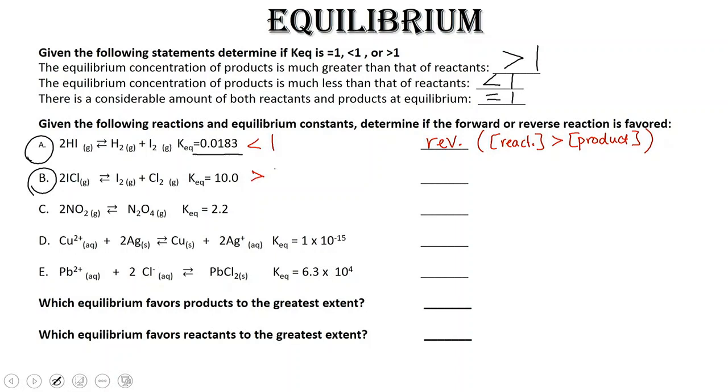So our forward reaction is favored, and what that means is I have a greater concentration of products versus reactants.